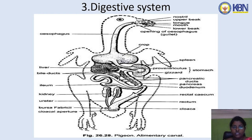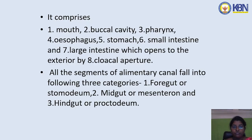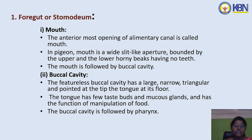The digestive system of Columba livia comprises mouth, buccal cavity, pharynx, esophagus, stomach, small intestine, and large intestine, which opens to the exterior by the cloacal aperture. All segments of the alimentary canal fall into three categories: first, foregut or stomodeum; second, midgut or mesenteron; and third, hindgut or proctodeum.